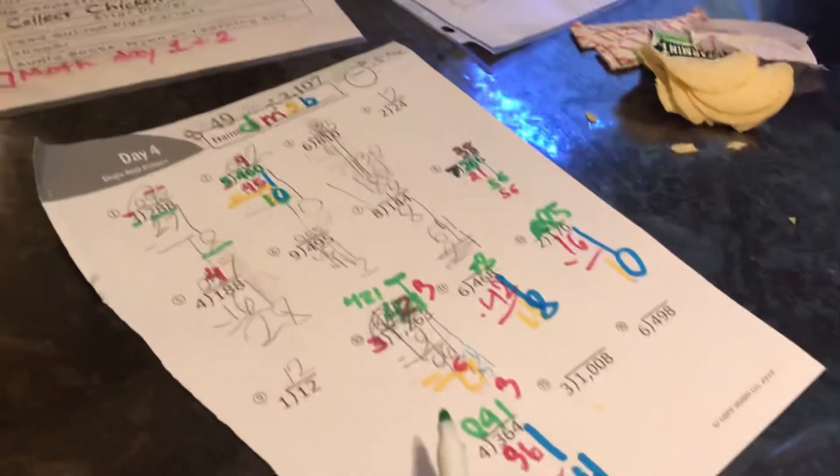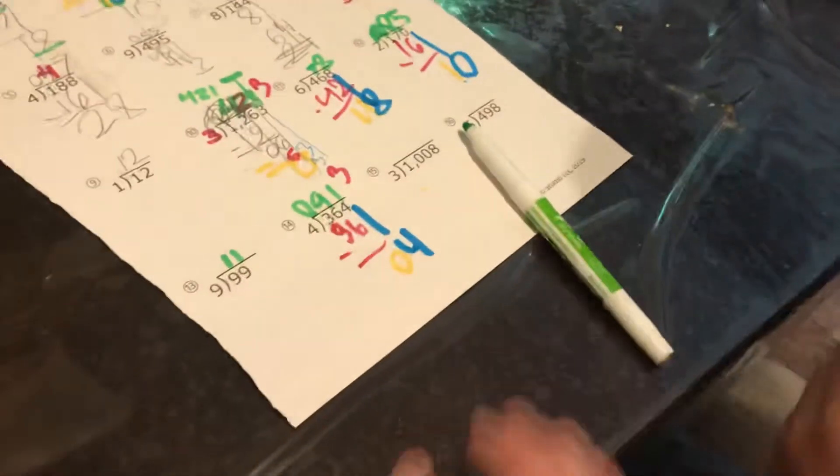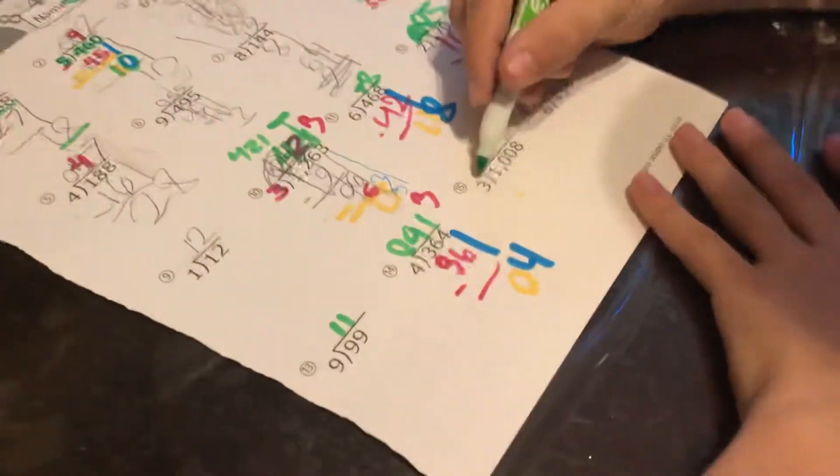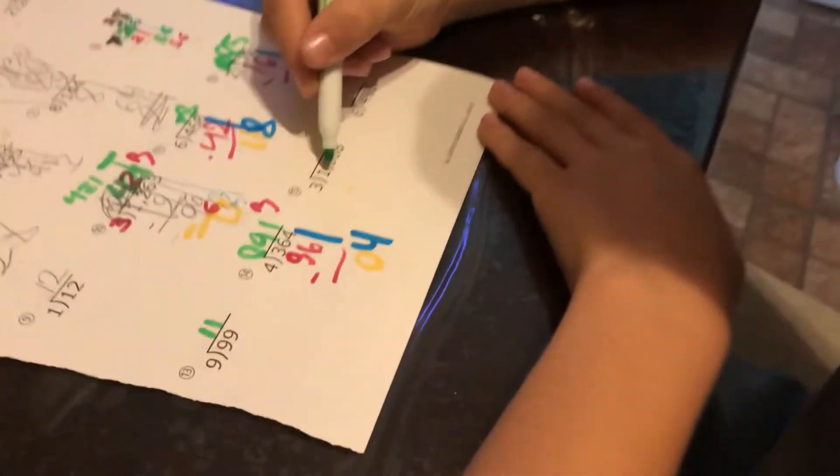Okay, just show us how to do number 15. So three is bigger than one, so you're not able to divide it, right? So you go to the next one.